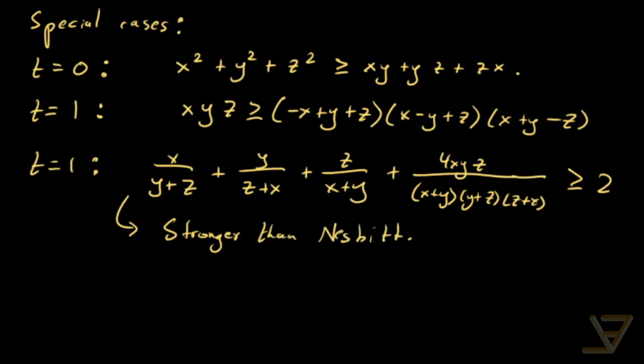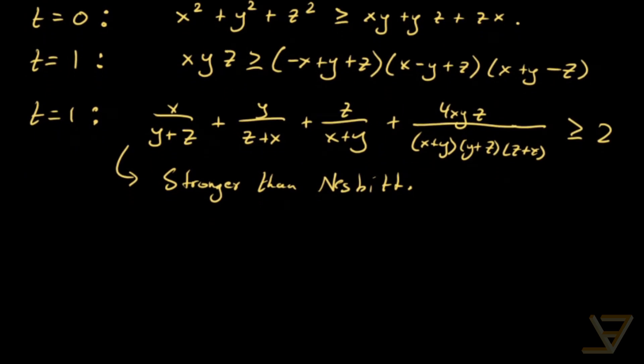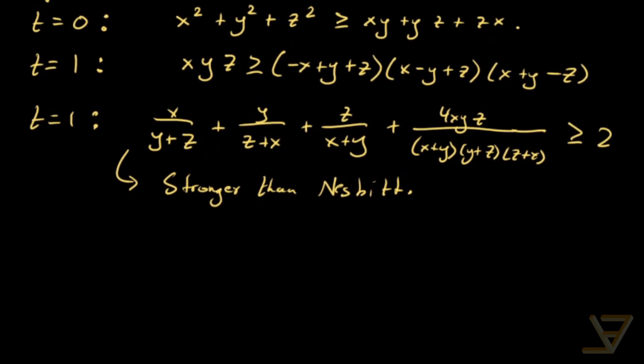If you don't know Nesbitt, I recommend looking it up. It's a fairly straightforward application of the Cauchy-Schwarz inequality, in particular the Engel's form or Titu's lemma.